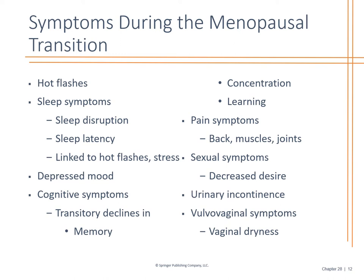Symptoms of menopause include hot flashes and sleep disruption, usually secondary to other associated symptoms. Women can become depressed and may have a decline in memory, concentration, and learning as part of the aging process. We need to rule out other causes if there's significant memory loss beyond what's anticipated for that age. There can also be aches and pains, decreased sexual desire, vaginal atrophy that makes intercourse uncomfortable, and urinary incontinence — all of which play into each other.